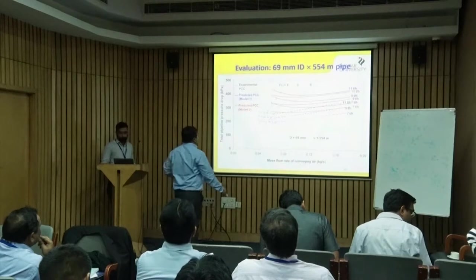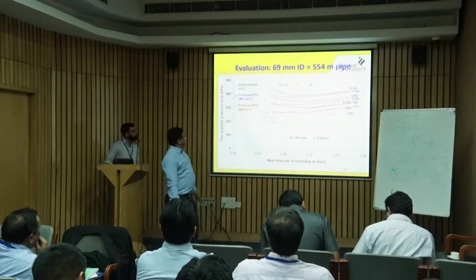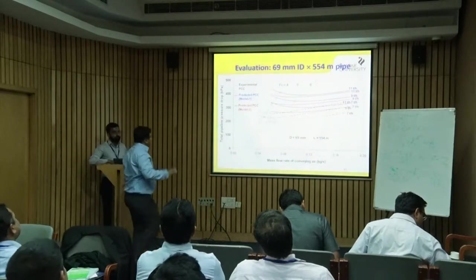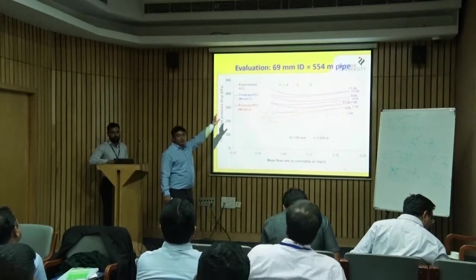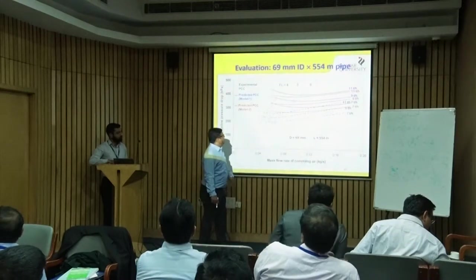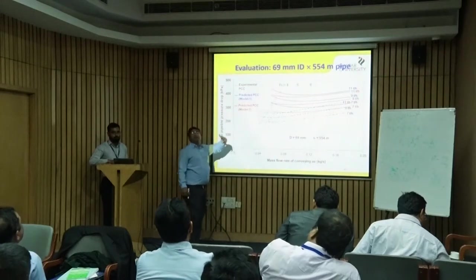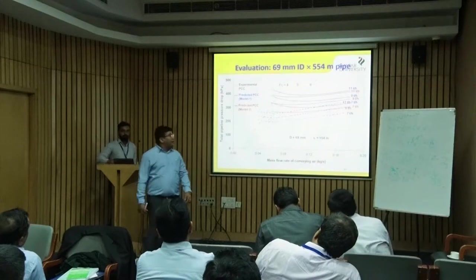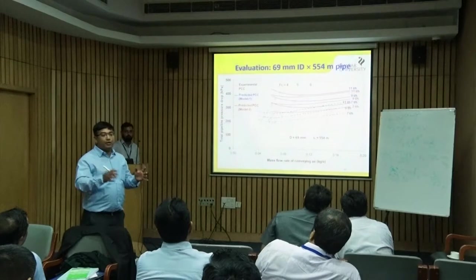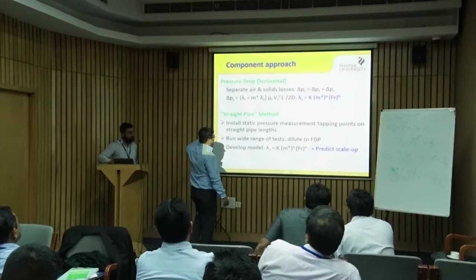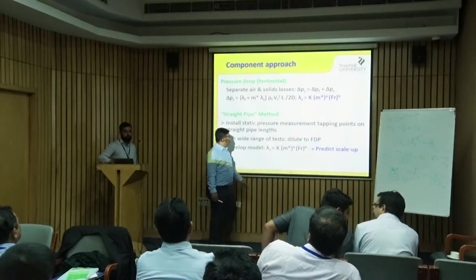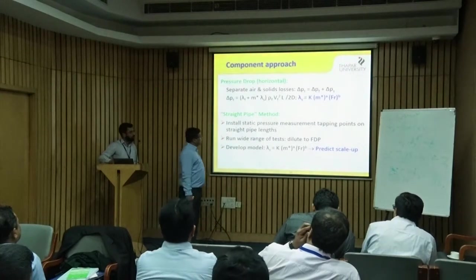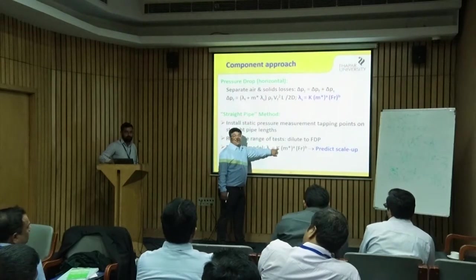We did evaluation work — conveying fly ash through a 550-meter line. This work was from my PhD. By now you know the pneumatic conveying characteristics diagram: pressure drop on the y-axis, airflow on the x-axis, with dashed lines corresponding to different mass flow rates of solids. We developed models using the m*–Froude number format, where in the λs model there is a constant and two exponents whose values come from regression on the test data.